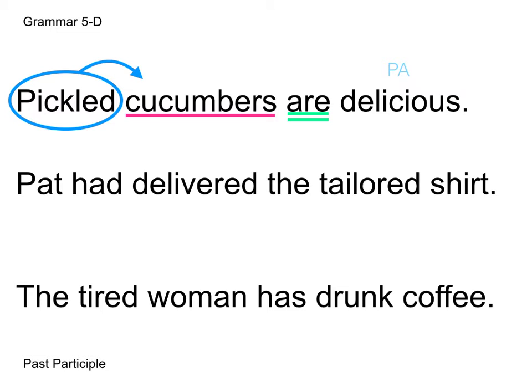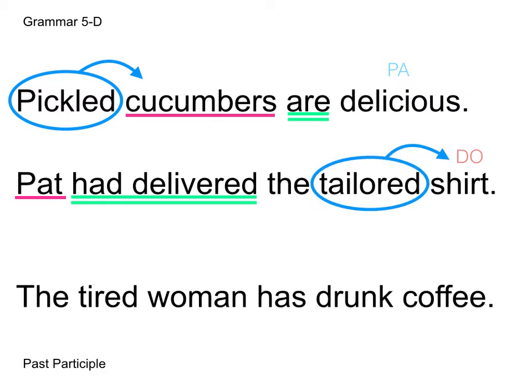Now let's look at another one: Pat had delivered the tailored shirt. Pat is our subject. What is Pat doing? He had delivered — so I'm going to double underline that. Notice how delivered is our main verb; it is a past participle, but it's not describing anything, it's just an action being completed by our subject. Now we have the rest of our sentence: the tailored shirt. Shirt is the thing being delivered — it is receiving the action, so I'm going to label that as my direct object. And then what kind of shirt is it? It's a tailored shirt — tailored, the past participle, is a modifier in this sentence. It's not an action being completed; instead it is just a modifier.